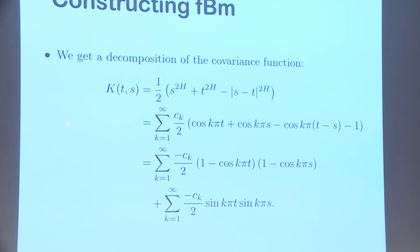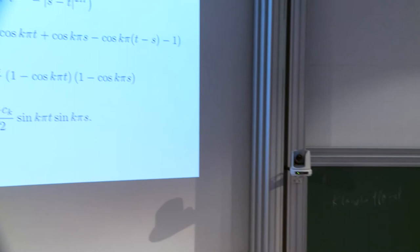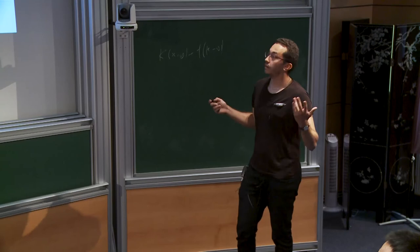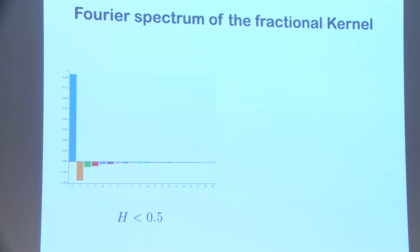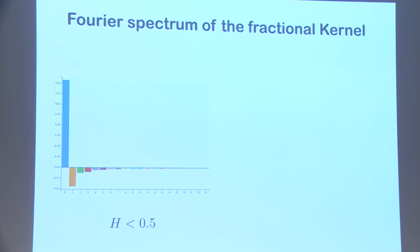So: do there exist functions for which all Fourier coefficients are positive or all negative? This seemed very strange at first. Looking at the spectrum for h < 0.5, surprisingly, all coefficients have the same sign — the C_k's are negative, so −C_k are all positive. For H < 0.5, you just take the square root. I was lucky when I first found this.